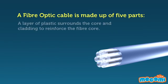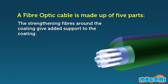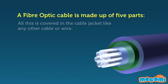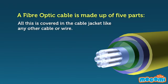A layer of plastic surrounds the core and cladding to reinforce the fiber core. The strengthening fibers around the coating give added support to the coating. All this is covered in the cable jacket like any other cable or wire.